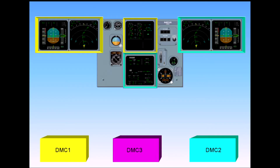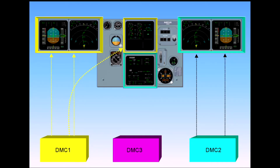Normally, DMC-1 supplies the captain's PFD, ND, and the upper ECAM screen. DMC-2 supplies the first officer's PFD, ND, and the lower ECAM screen. DMC-3 is available as a backup.